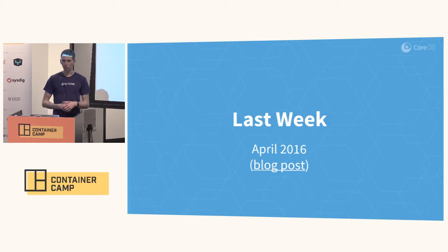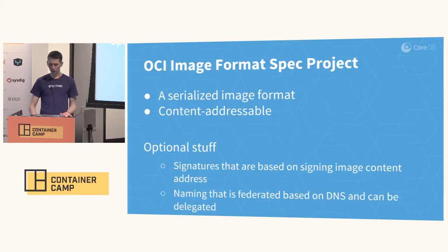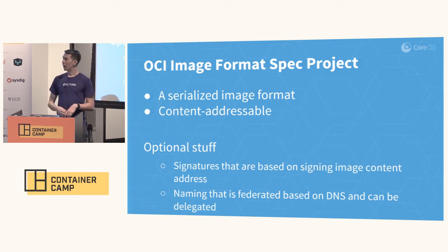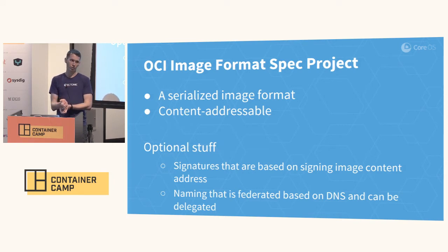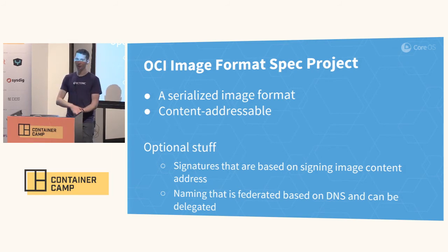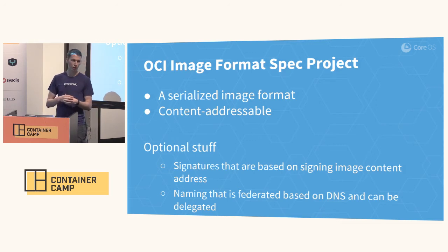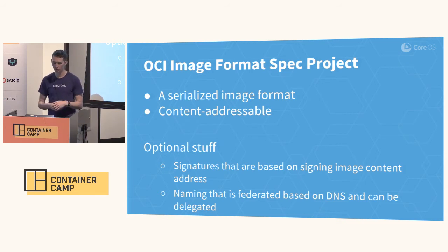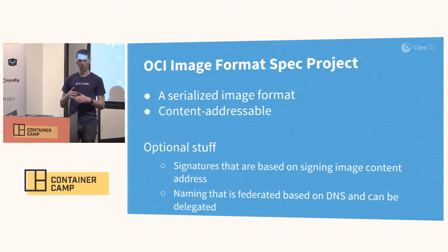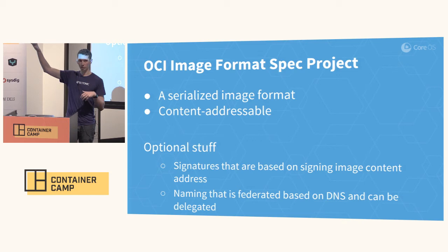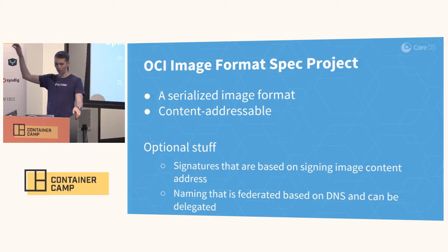Last week, we formed a new project inside the OCI called the OCI image format spec. This is really exciting because it means that all these folks who have implemented registries — Amazon has a public registry they run, Google has a public registry they run, CoreOS has a public registry Quay that we run, Docker has the Docker Hub — all these folks are in the same room talking about how do we actually write down a spec that can be shared and hopefully interoperate between all these different systems. We're starting with a pretty good starting point, and we have the major things addressed: a serialized image format in scope and a content-addressable manifest.